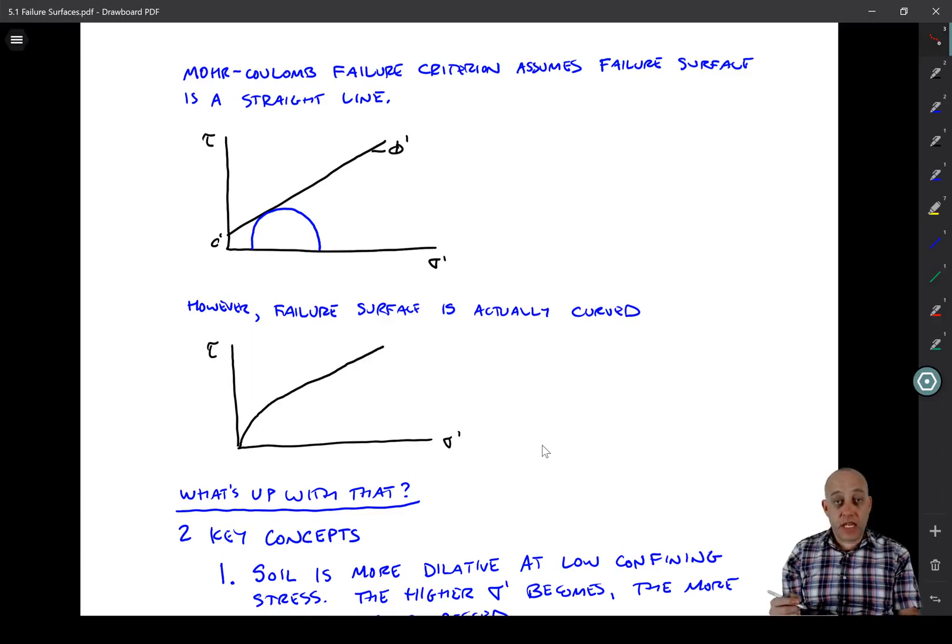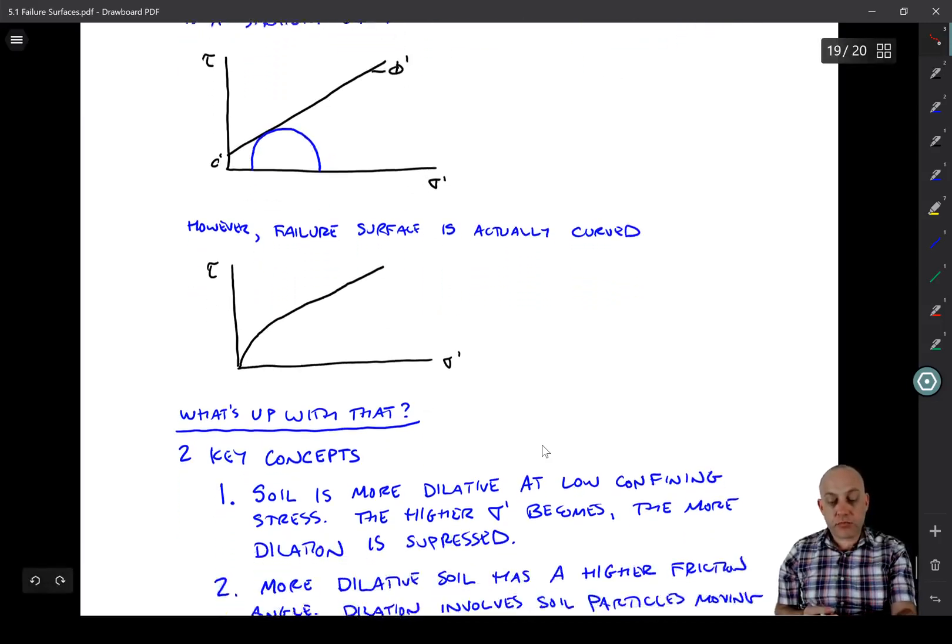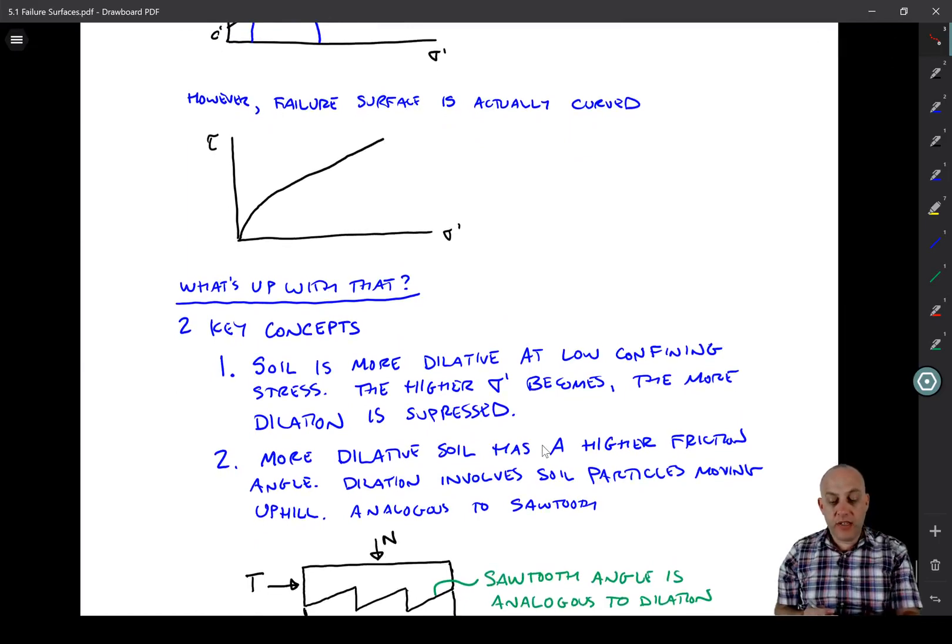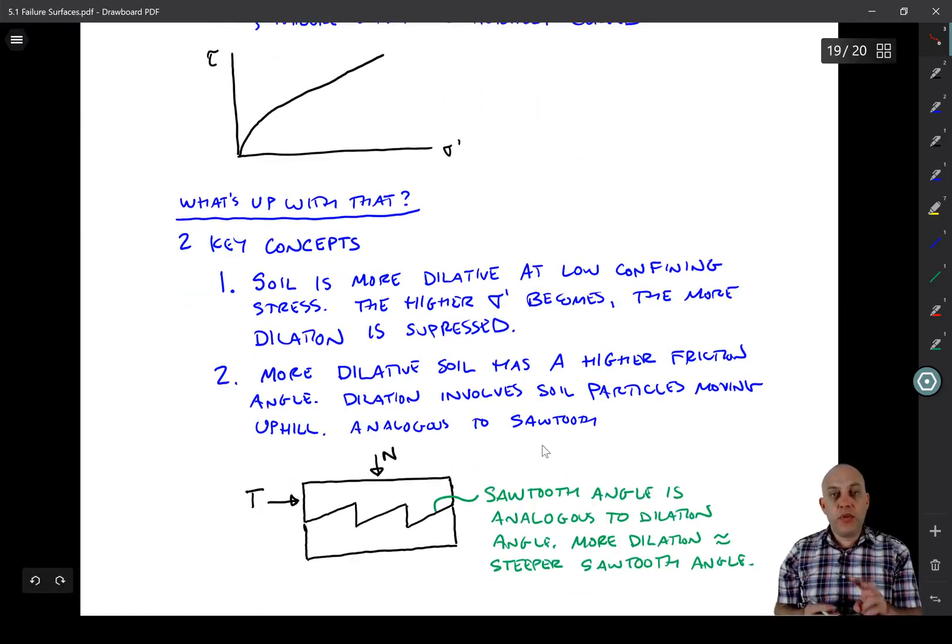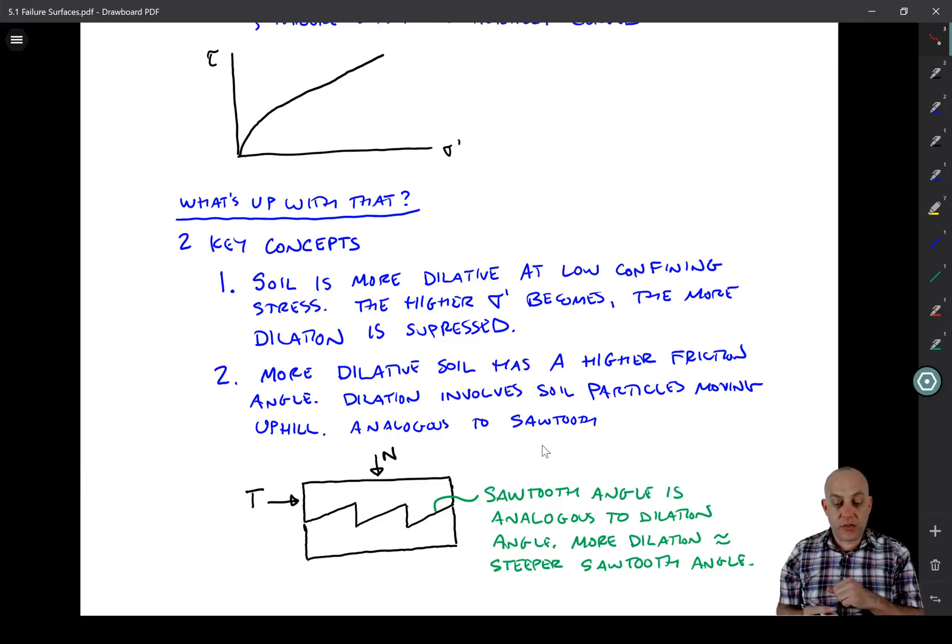However, we've observed from many tests now that the actual failure surface is curved. It's not a straight line. So it looks something like what's drawn in that lower figure. So what's up with that? Why is that failure surface actually curved? Whereas we often assume it to be a straight line. Well, it's related to critical state soil mechanics. And in particular, there are two key concepts from critical state soil mechanics that contribute to this observation.